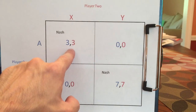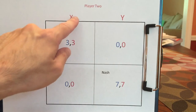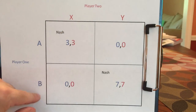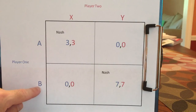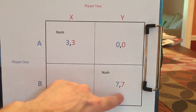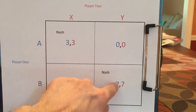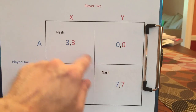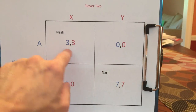That holds here, but it doesn't hold for BX — both parties would regret. If player two plays X, player one is going to regret playing B, preferring to have played A. And if player one plays B, player two would regret playing X, saying: had I known he played B, I would have played Y. So this game has only two Nash Equilibria — AX and BY — and it's important for you to understand why.